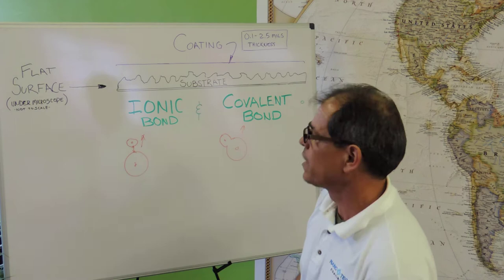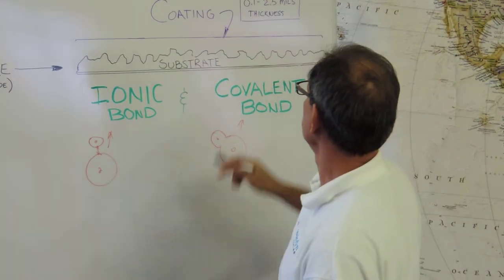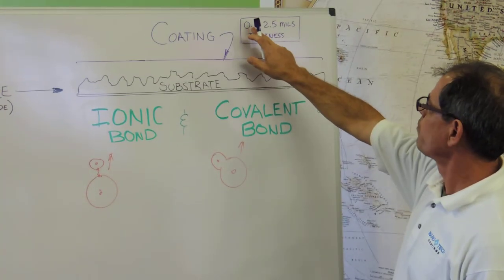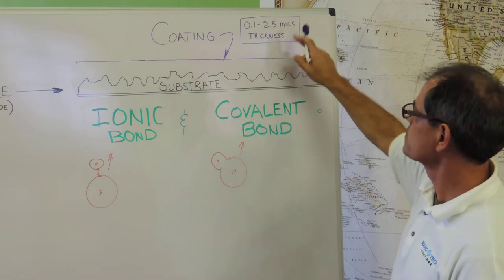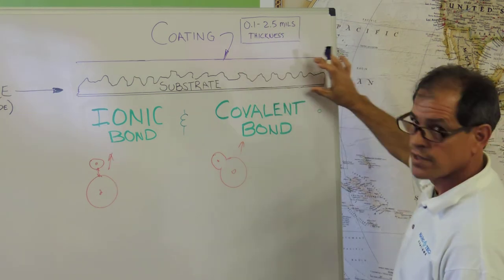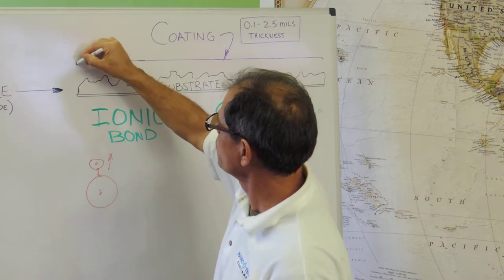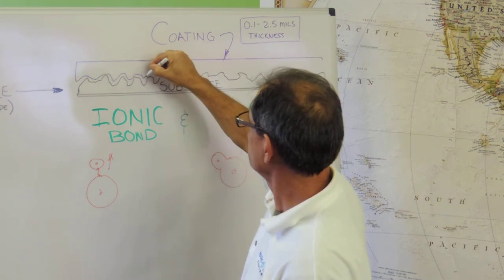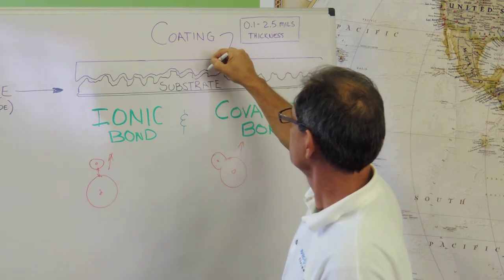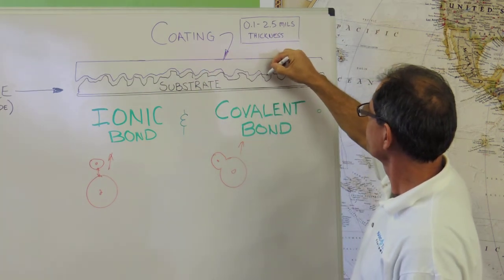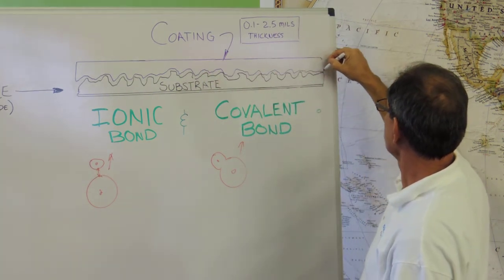Now we're going to go to the coating that you're going to put on top of that substrate, which we're looking at anywhere from 0.1 to 2.5 mils thickness. So you get an idea of the thickness that we're dealing with. We're going to represent that by this purple here. This is how the coating will go on. And it will work its way in between all the different areas depending upon the viscosity of your product and lay on top of it like that.